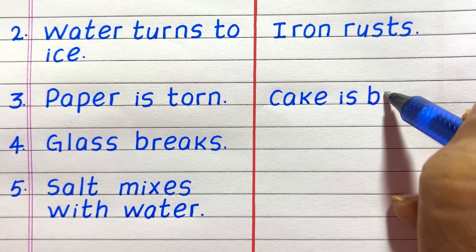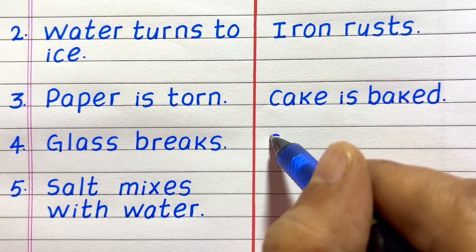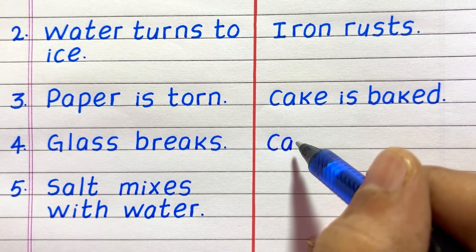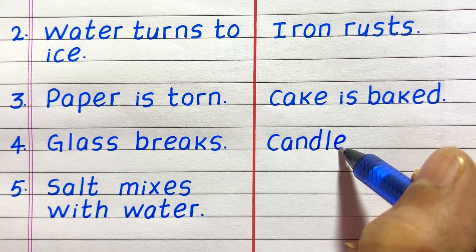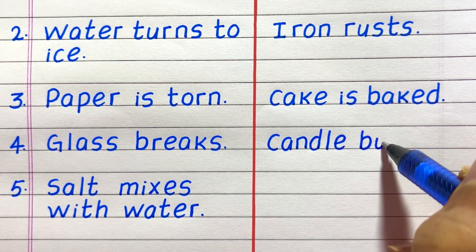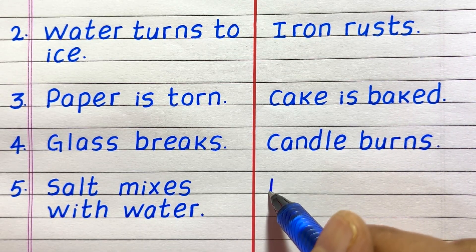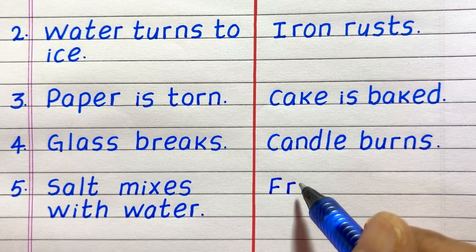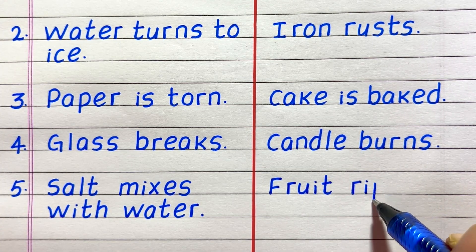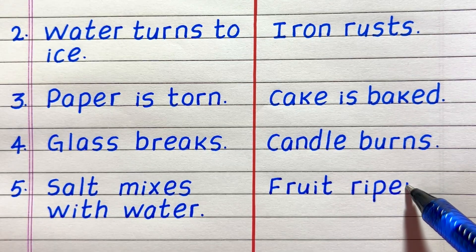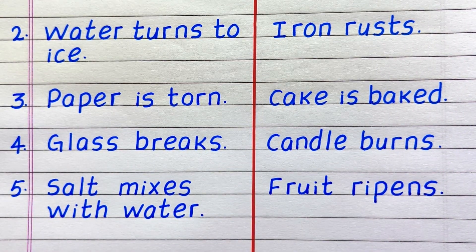Third example of a chemical change is cake is baked. Fourth, candle burns. Fifth, fruit ripens.